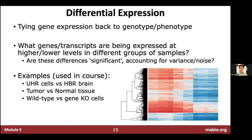Once we have expression estimates — either counts or TPMs — we do differential expression analysis. This is usually about tying gene expression back to some genotype or phenotype of interest: which genes or transcripts are expressed at higher or lower levels in one group versus another. Crucially, we want to know which differences are statistically significant, accounting for concepts like variance and noise.